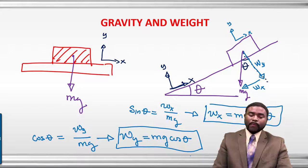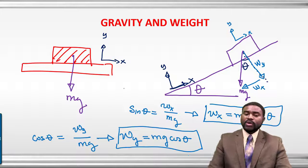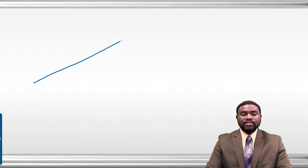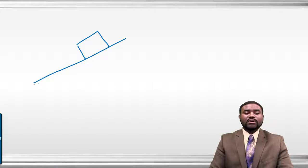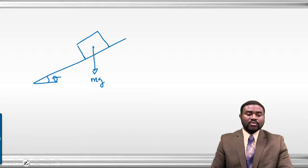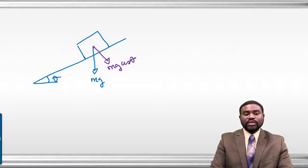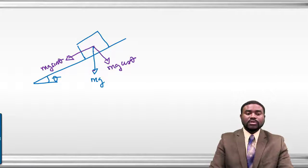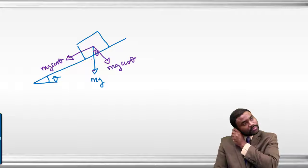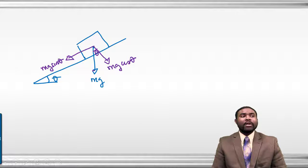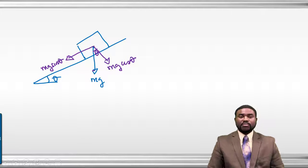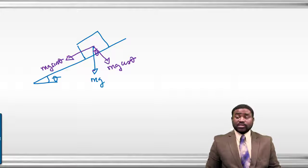Keep in mind that we have oriented our axes to lie along the plane. Therefore, if I draw this object on the inclined plane where this angle is theta, this is mg. We can resolve the weight as mg·cosθ perpendicular to the plane and mg·sinθ along the plane, remembering that this angle is theta. This will come in handy a lot.